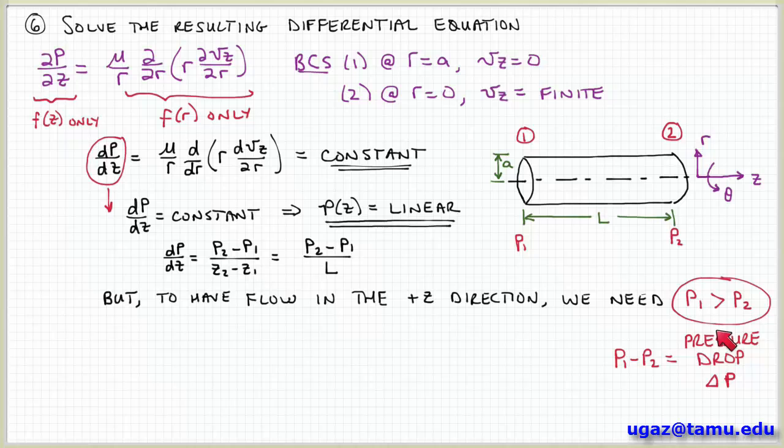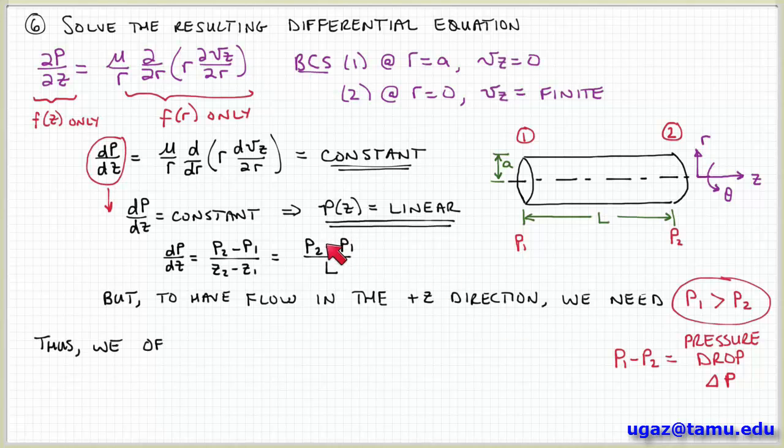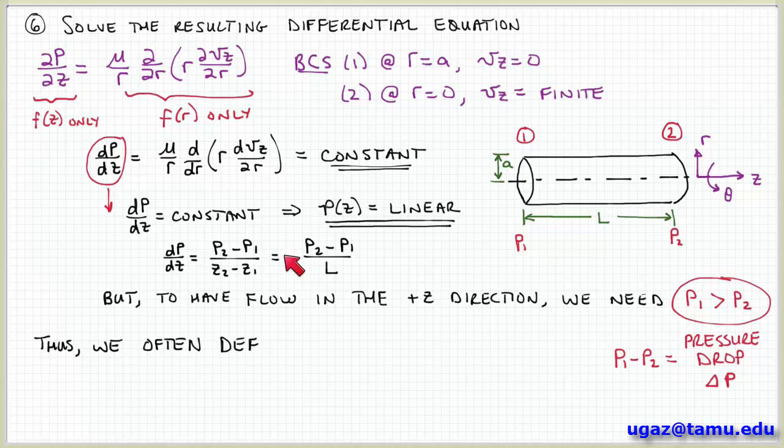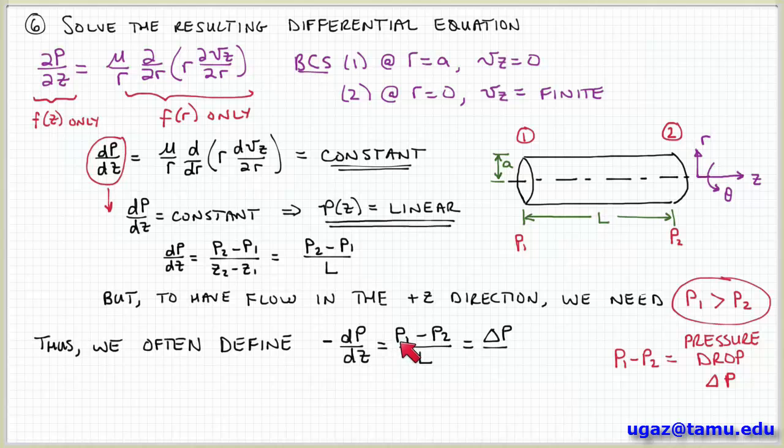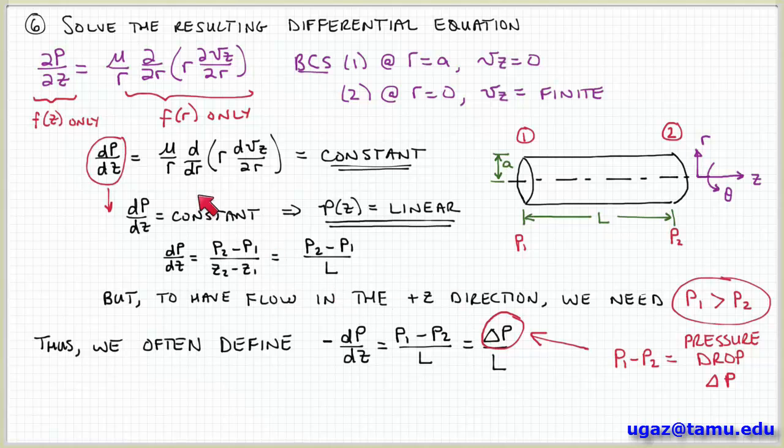But now if we want to use this pressure drop term in our equation, then we need to rearrange it a little bit. And specifically, we need to basically take the negative of this quantity because pressure drop is defined as p1 minus p2. So we can define minus dp dz as p1 minus p2 over L or delta p over L. So basically, we could either write our differential equation like this, recognizing that this is a negative quantity. We have a negative pressure gradient to establish flow in the plus z direction.